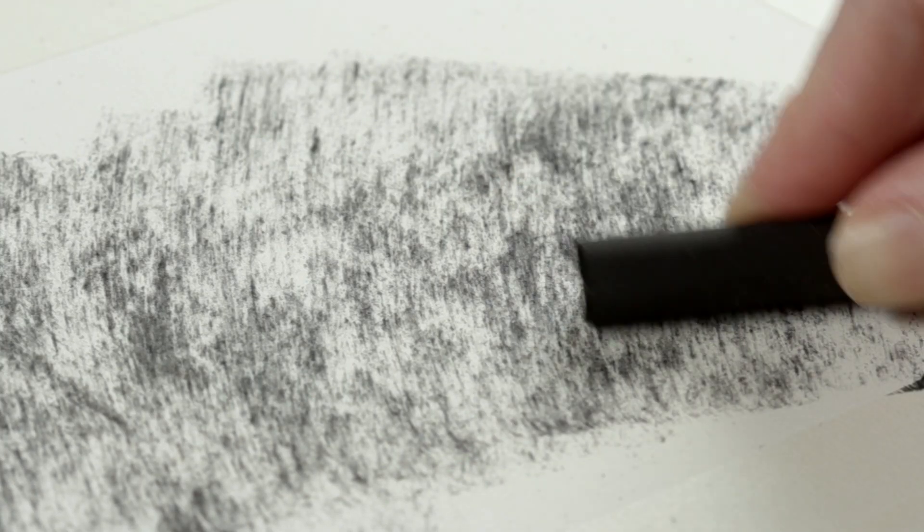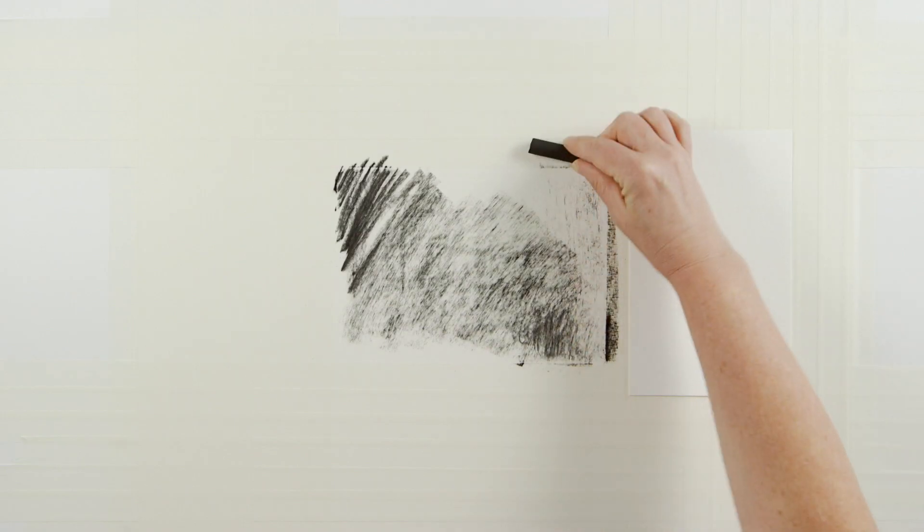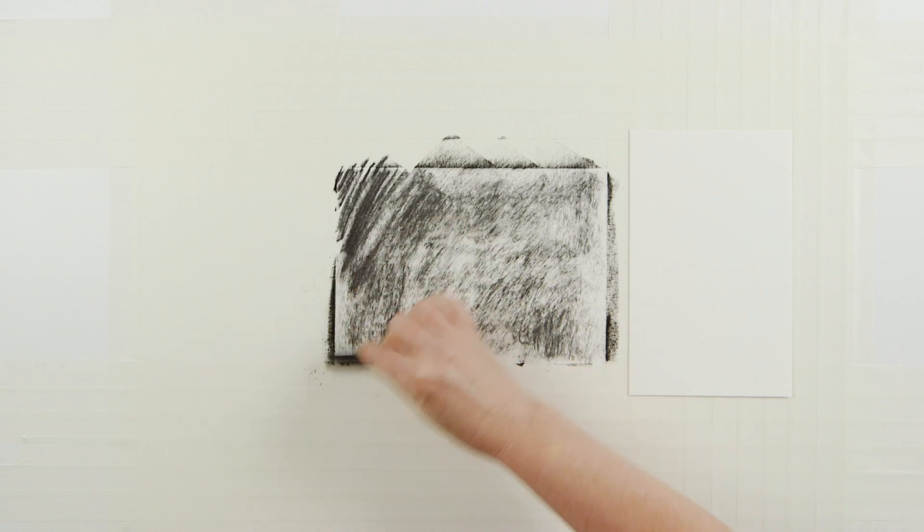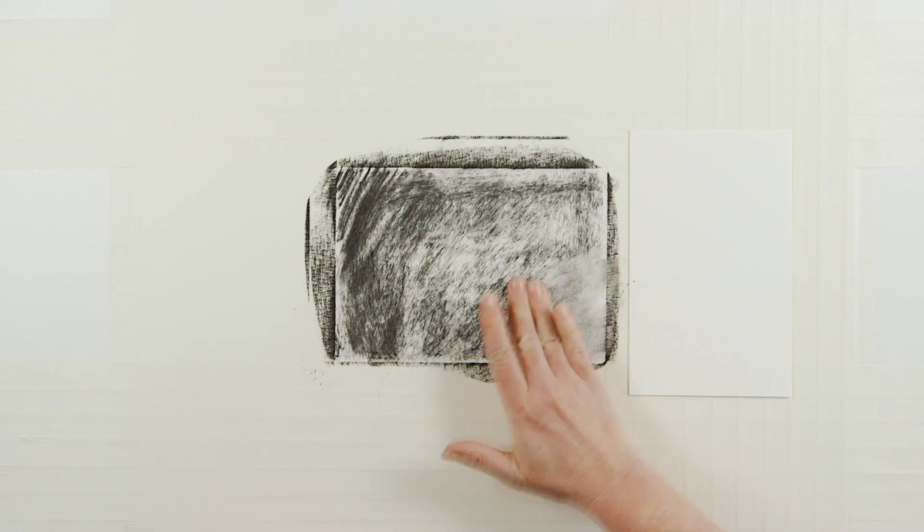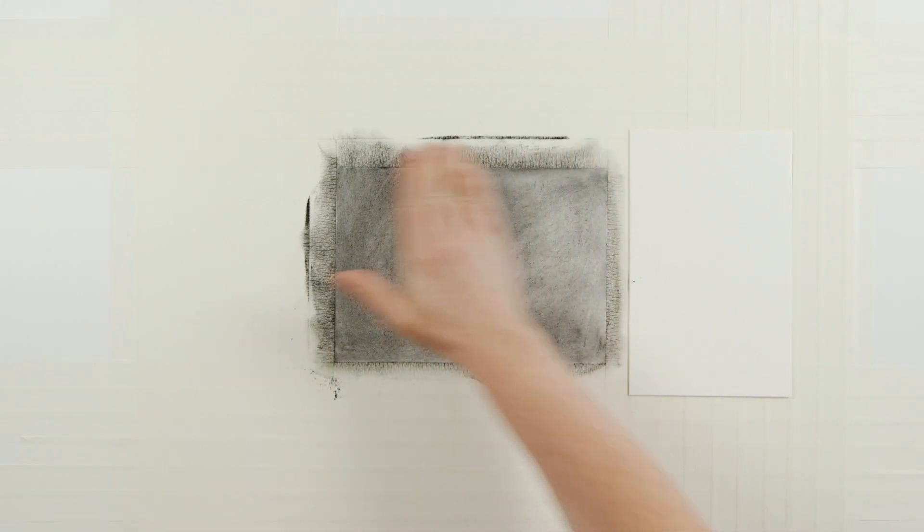Now I'm going to show you how you can increase the density of your charcoal using layers of spray fixative. To demonstrate this, I will mask an area and put down a layer of charcoal, which I will spray in order to fix the charcoal on the paper.